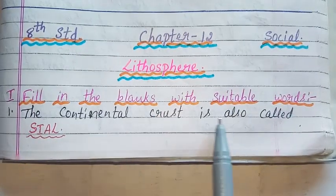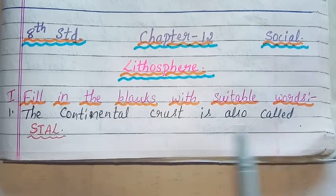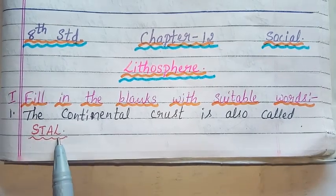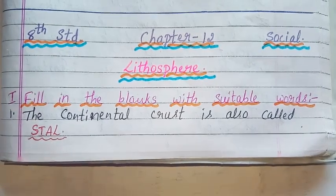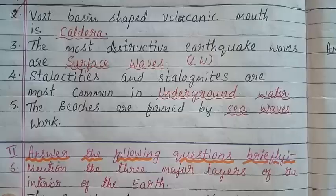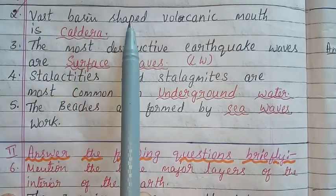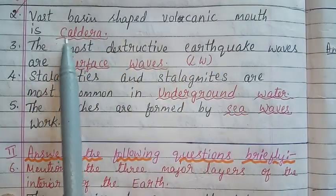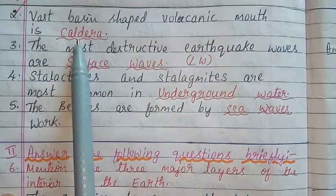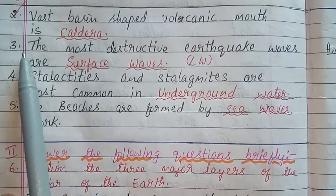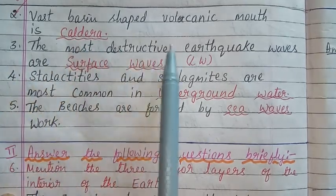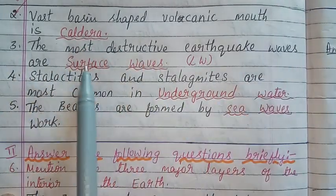First one: The continental crust is also called — Answer: SIAL. Second one: A vast basin-shaped volcanic mouth is — Answer: Caldera. Third one: The most destructive earthquake waves are —